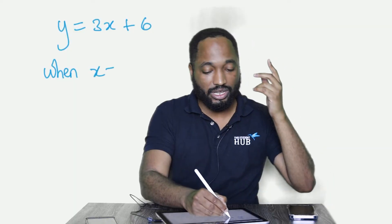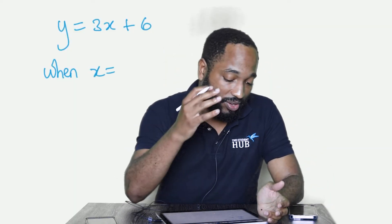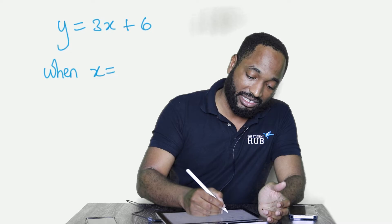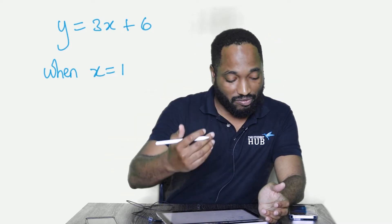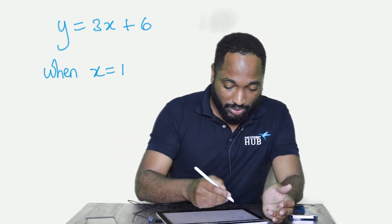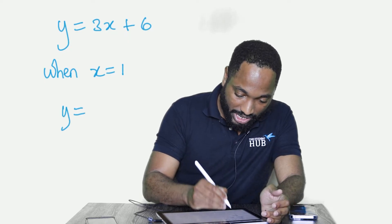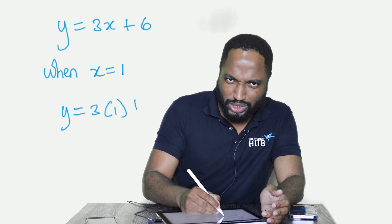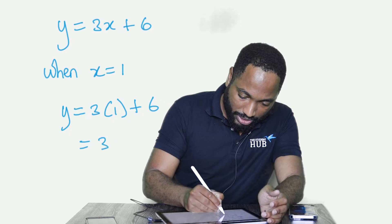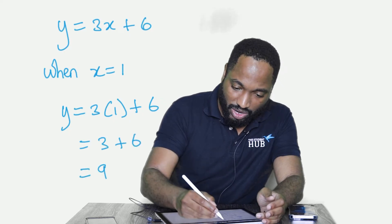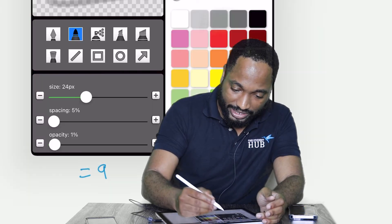So one of the uses of the equation, let's say we're trying to figure out when x is 1, what will be the corresponding value of y. We can now use the equation, substitute in x being 1, and you get 3 plus 6 equals 9. So now we know this coordinate exists.